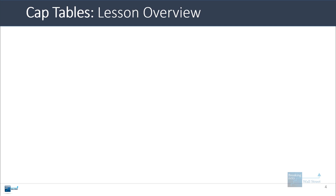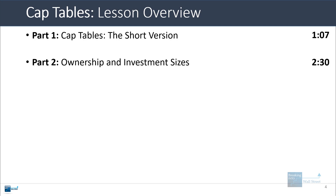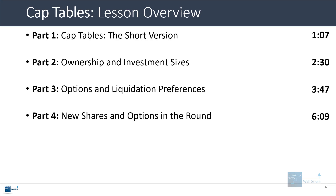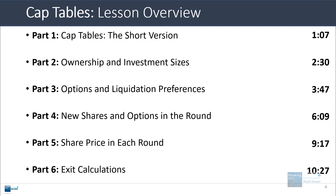I'm going to start with a short version of cap tables, then we'll go through ownership and investment sizes. We'll look at options and liquidation preferences, then new shares and options created in each round. We'll look at the share price calculation each round, and then go through some exit calculations and explain the significance of cap tables there.